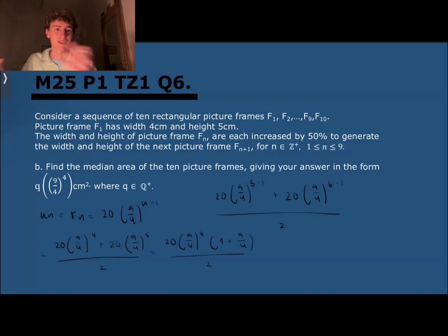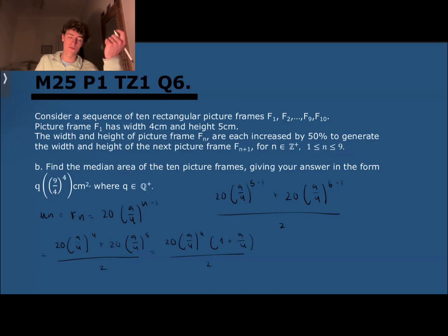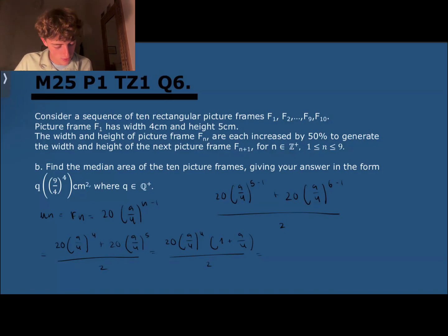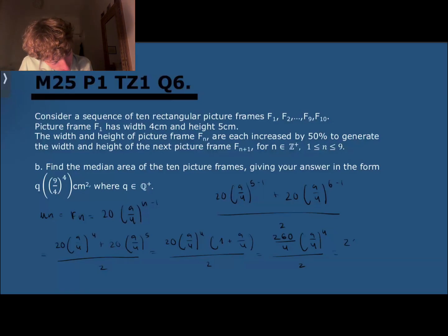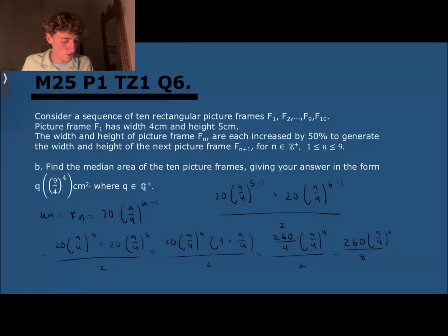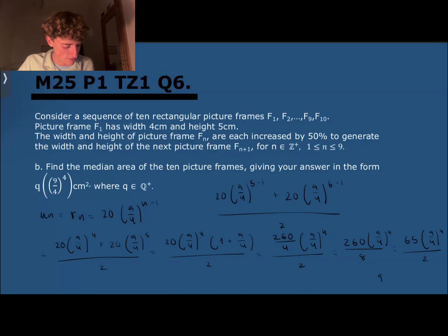If you multiply back out, you get exactly what we had before — it's just another way of writing it. Now we add 1 plus 9/4, which is 13/4. Multiplying 20 by 13/4 gives 260/4. So we have 260/4 times (9/4)^4 over 2, which simplifies to 260/8, then further to 65/2 times (9/4)^4. Therefore q equals 65/2, and that question is done.